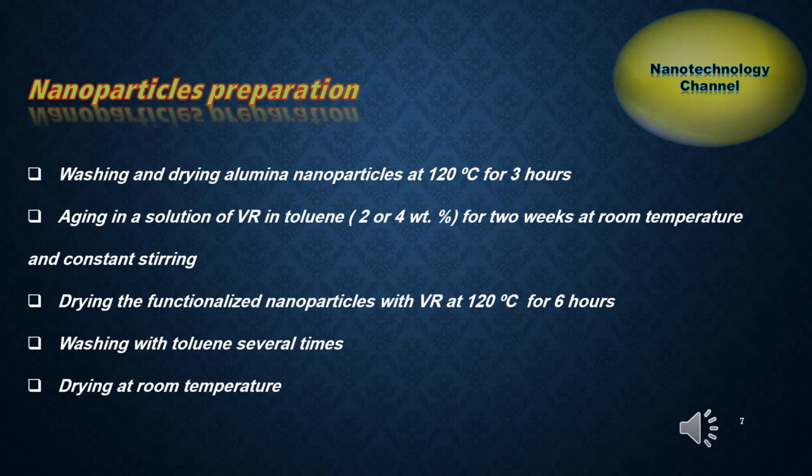The first step in nanoparticle preparation is washing and drying fresh aluminum nanoparticles at 120 degrees Celsius for three hours. The second step is aging a solution of VR in toluene for two weeks at room temperature with constant stirring.